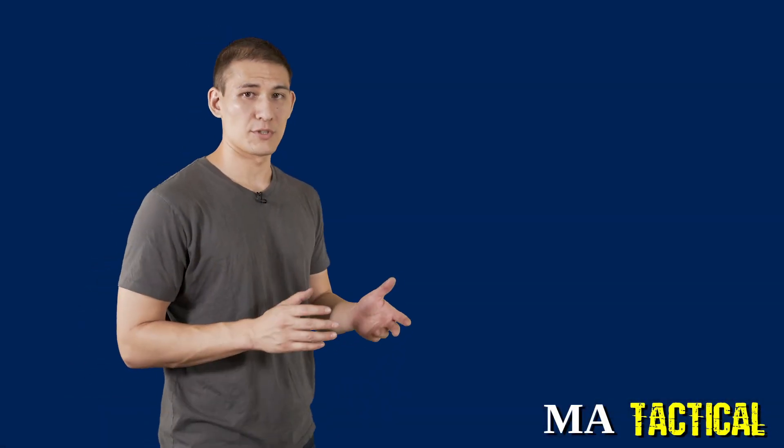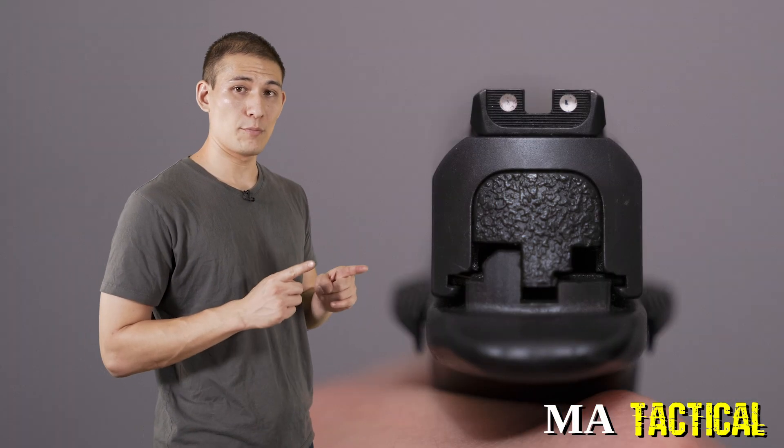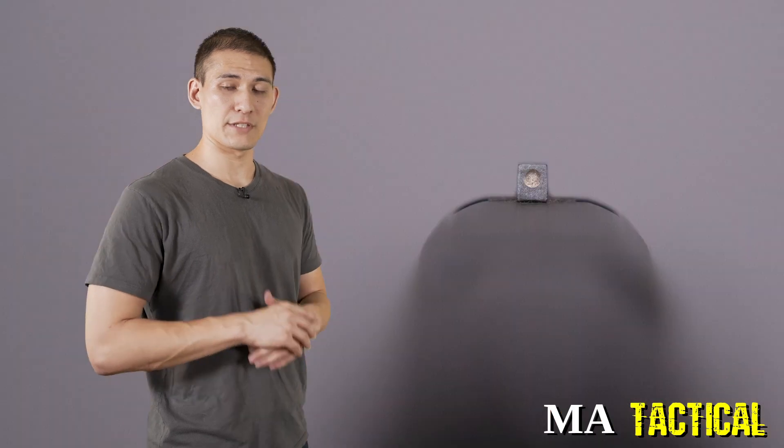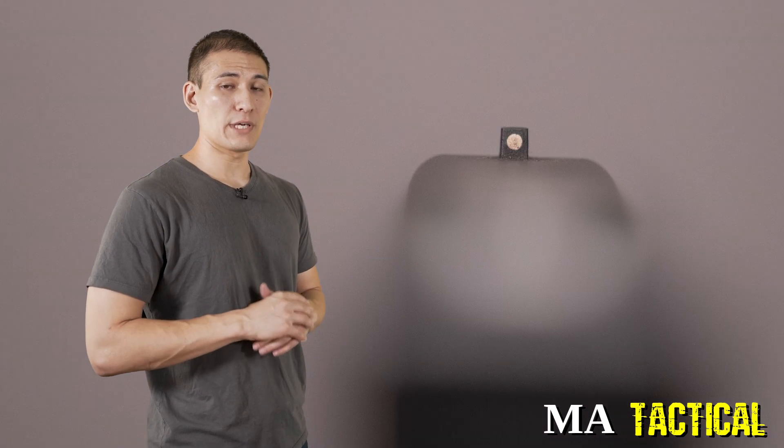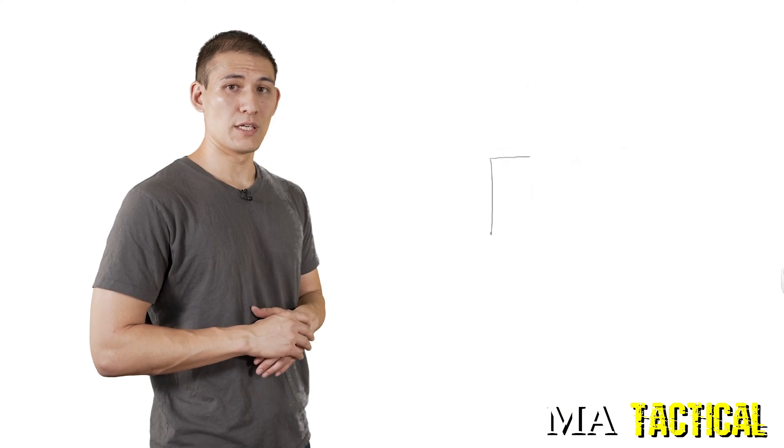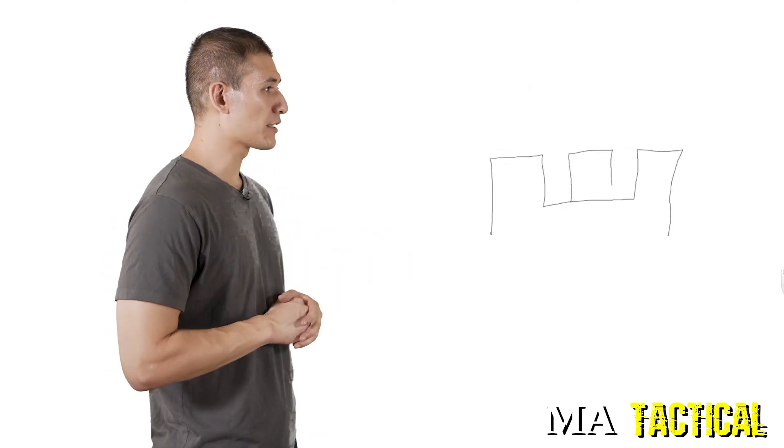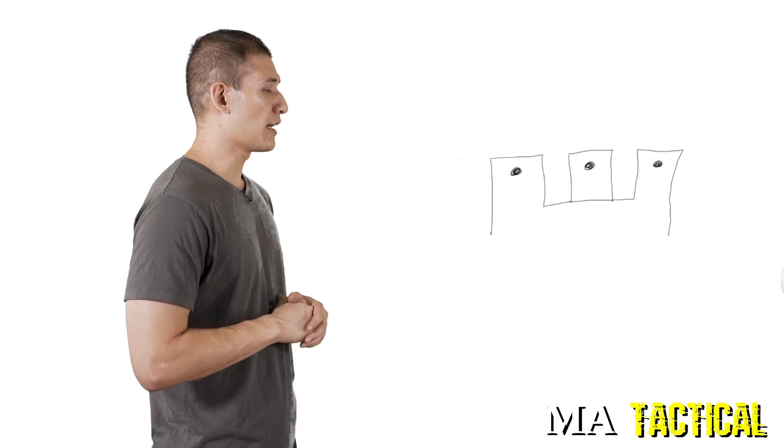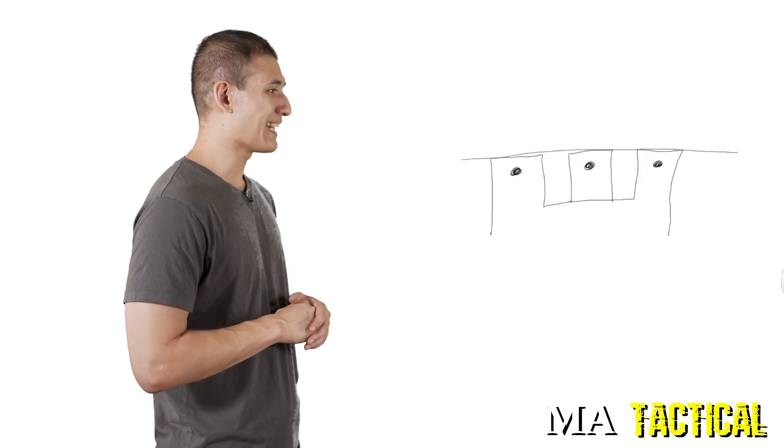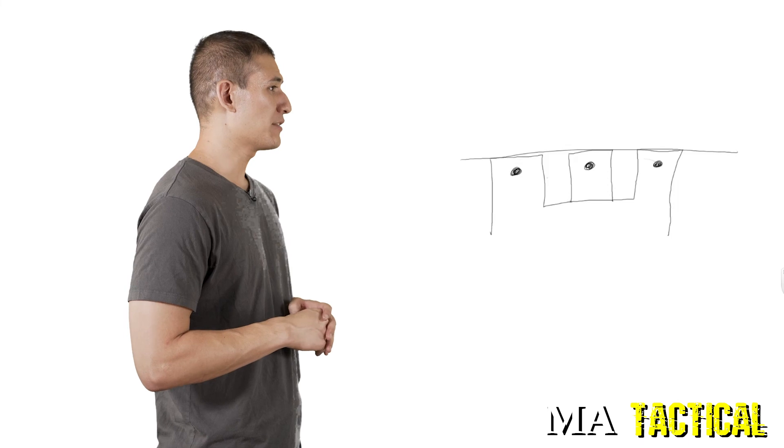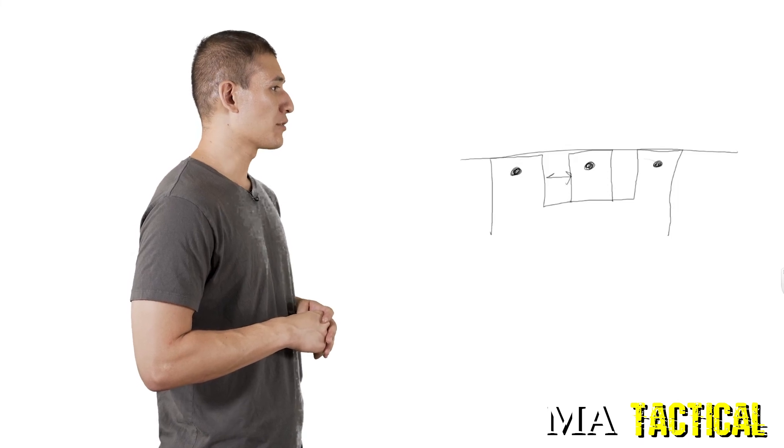So with all iron sights, what you're going to have is a rear sight which has two posts and a front sight which has a single post. All you have to do is put the front sight in between the rear sight like so, and you have to make sure that the tops are all aligned in the same height and then the space on either side of the front sight post is also equal.